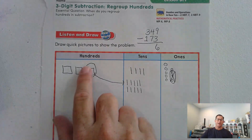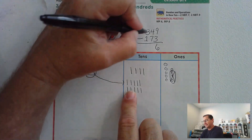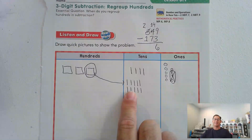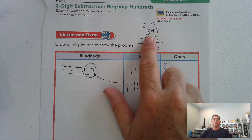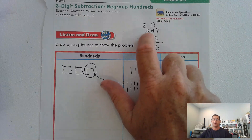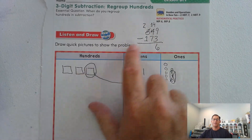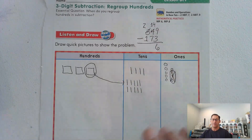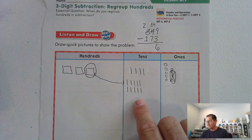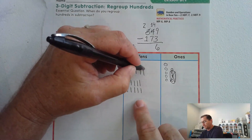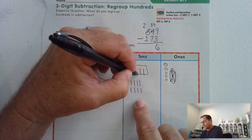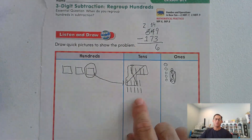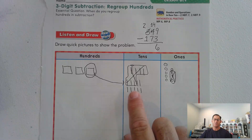So we traded 100 for 10 tens. We took one of the hundreds, leaving us 200, and traded it for 10 tens. 10 tens plus 4 tens is 14 tens. Now can we take away 7? Yes — so we have 4 and 3 more, and we're left with 2, 4, 6, 7 tens.